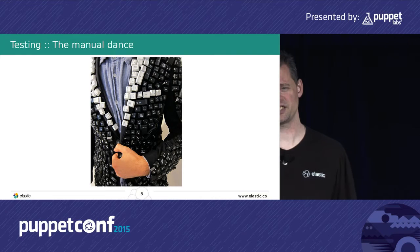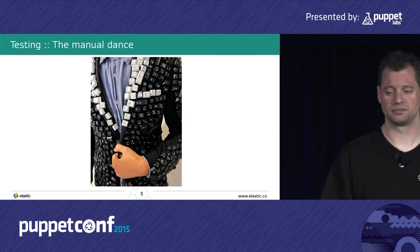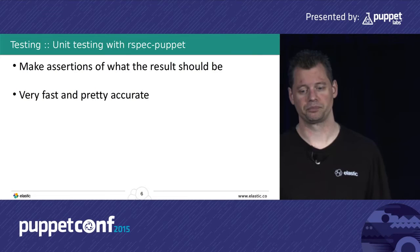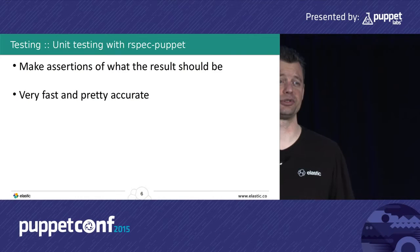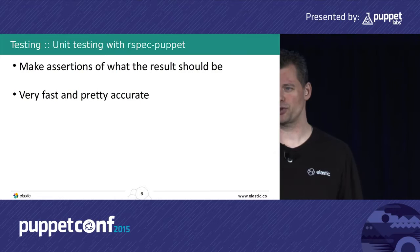Manual testing doesn't scale at all — it's just you running those tests. So we can start with unit testing. With RSpec Puppet, it allows you to make assertions of what the modules should do, or at least what you expect it to do.